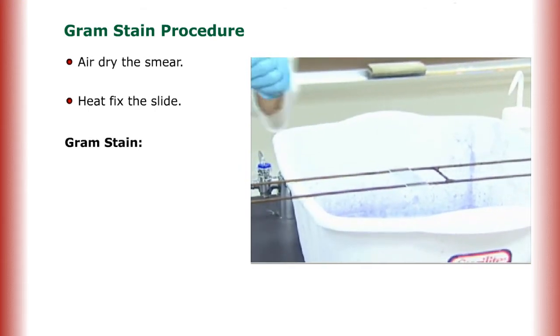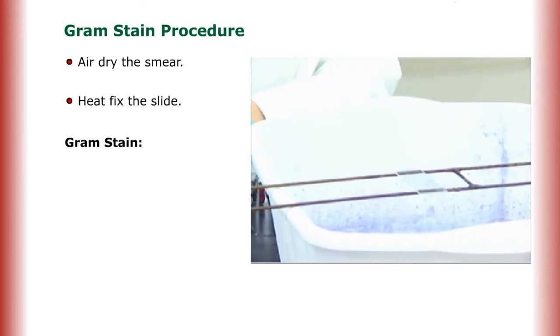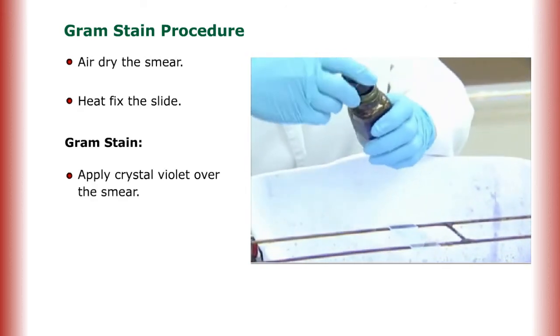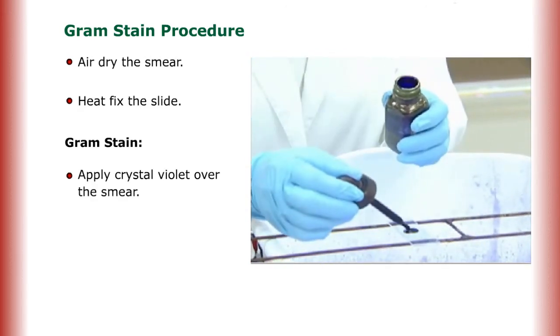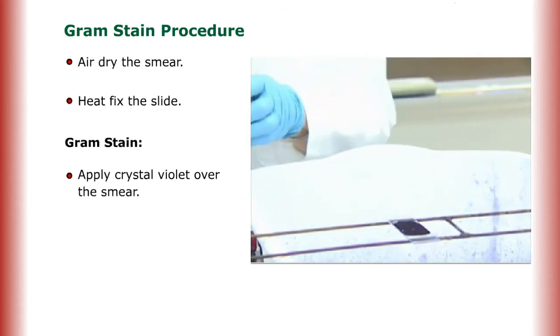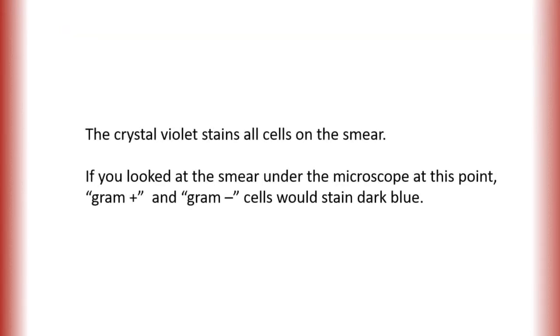For the Gram Stain, the first step is to take crystal violet and put it over the smear I just made. Leave it on the slide for 30 seconds. The crystal violet stains all cells on the smear. If you looked at the smear under the microscope at this point, Gram positive and Gram negative cells would stain dark blue.